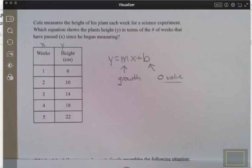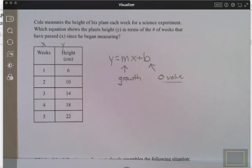It's your starting value. So that's the only hint I'm going to give you. You need your growth rate and your zero value, and we're going to substitute it in for M and B. Good luck.